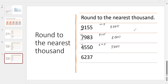After rounding, we have 5,000. And the last one: we have 6,000, and the next digit is 2. Since 2 is less than 5, we don't need to add 1. After rounding, we have 6,000.